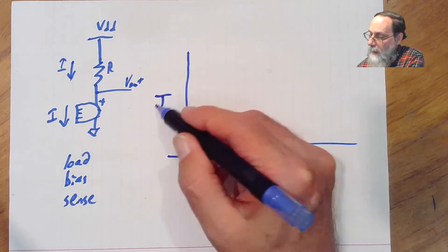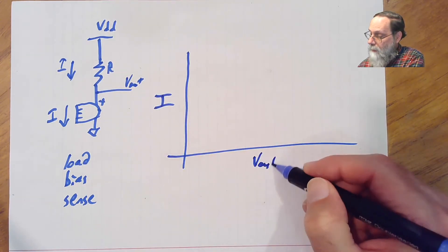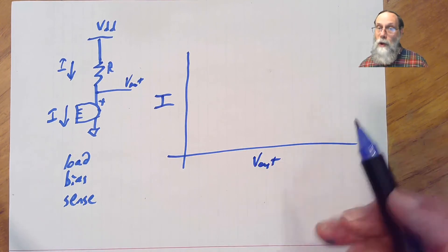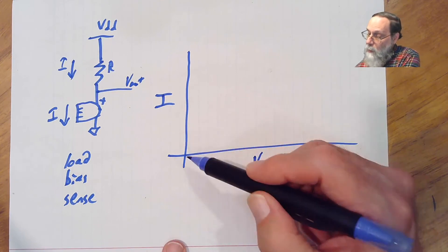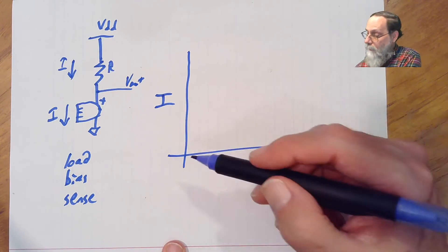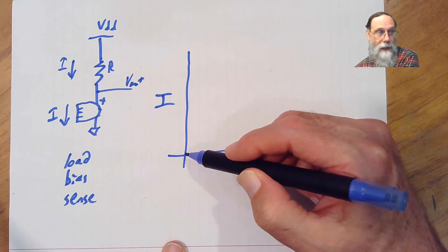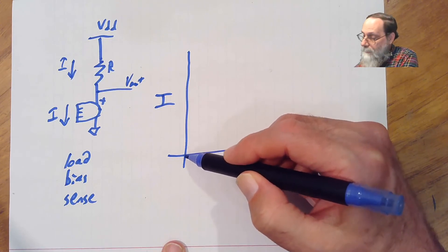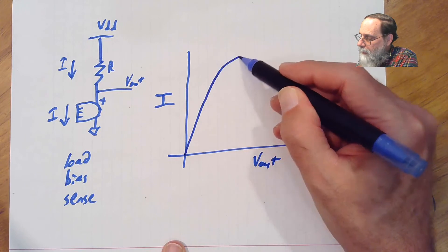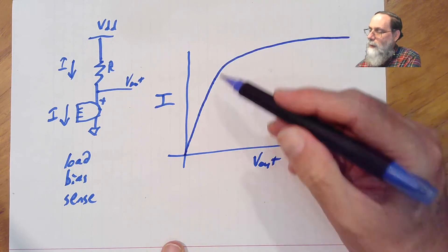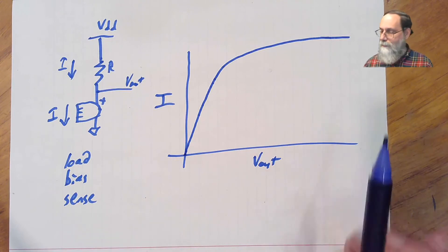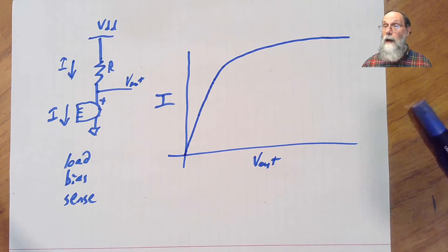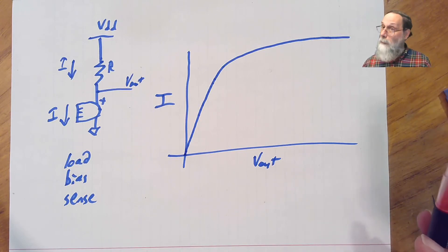We have the current and we have V out. The current is the current through the microphone and V out is the voltage across the microphone. So we can look at the characteristic curve for the microphone and you'll be measuring that in lab seven. But it looks something like this with a linear region at low voltage and a saturation region at higher voltage.